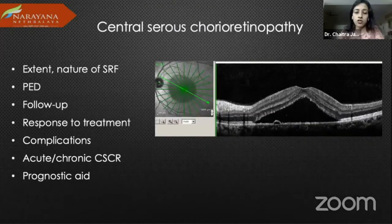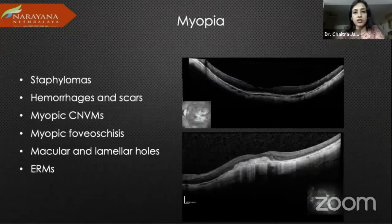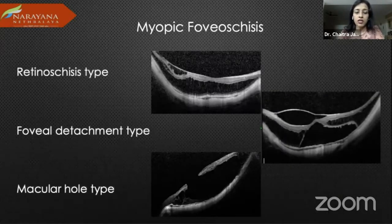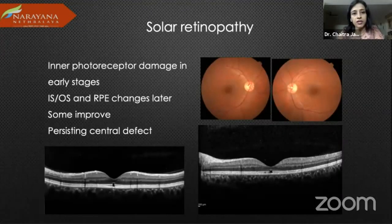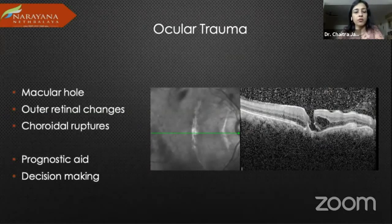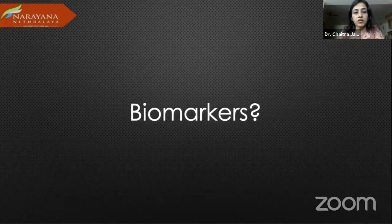Central serous retinopathy, now with the pachychoroid spectrum, OCT has become very useful — you can see the extent, the PED, follow-up response to treatment, and complications. Post-treatment resolution of fluid is visible. For myopia, contrast is much reduced on clinical examination, so we can pick up subtle lesions including CNVMs. For myopic foveoschisis, OCT has really changed management in determining whether a patient requires treatment, and the different types are well delineated. Solar retinopathy shows inner photoreceptor damage in earliest stages and RPE changes later, with a persisting central defect. Ocular trauma shows formation of macular hole, outer retinal changes, and choroidal ruptures. For RP, you can see loss of photoreceptors, thinning, and cystoid changes that don't necessarily show leakage on angiography.